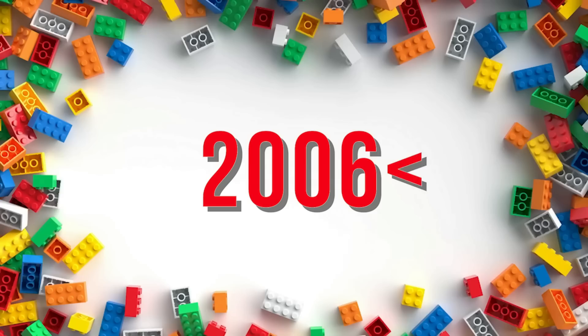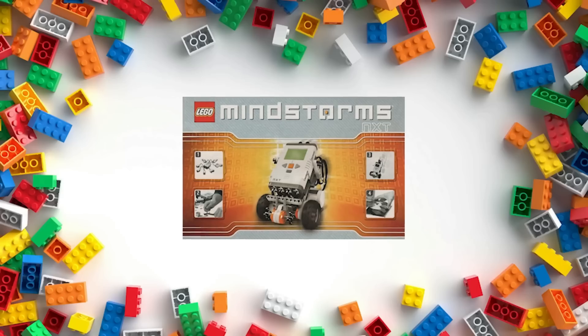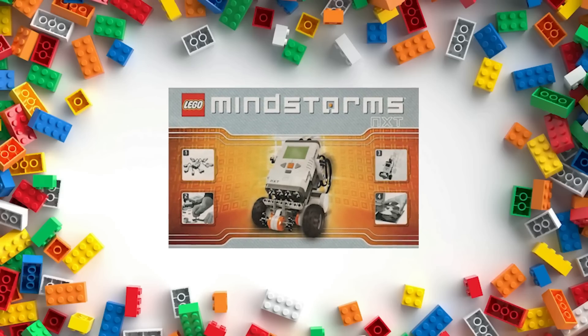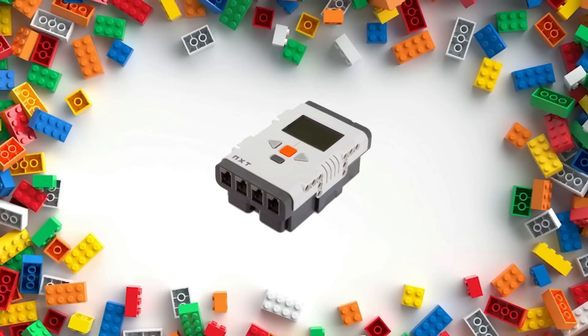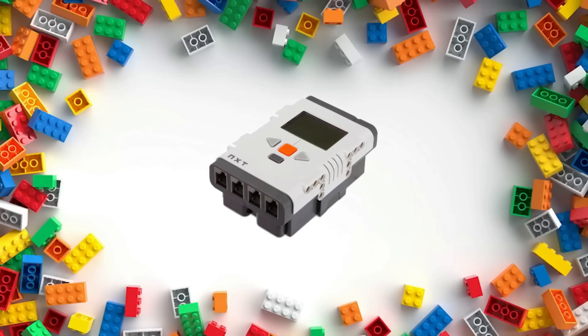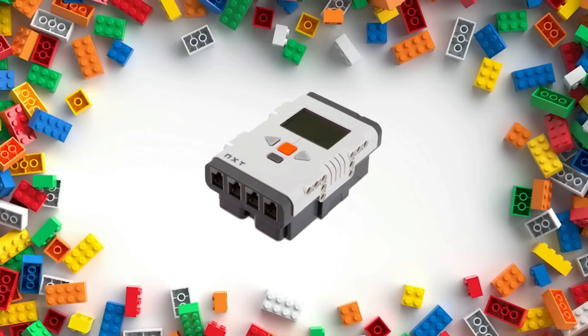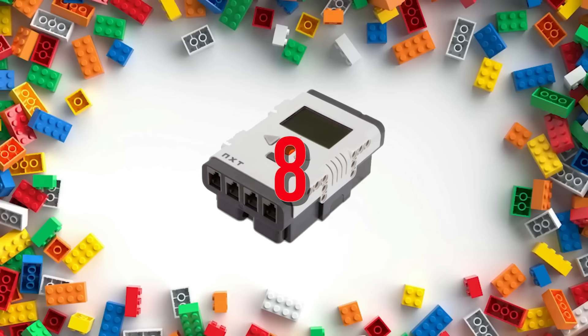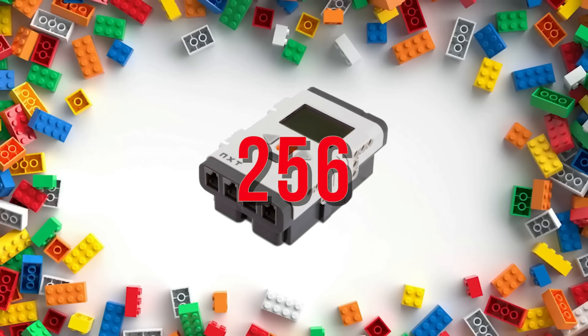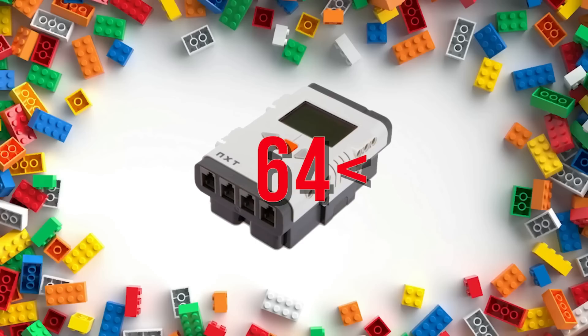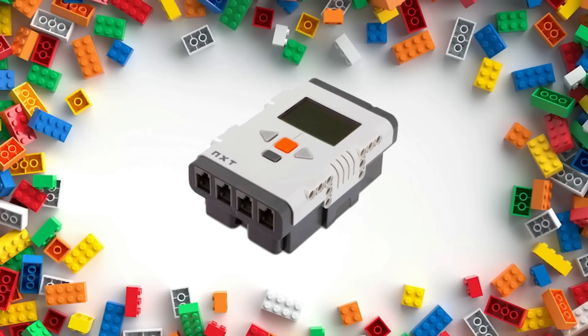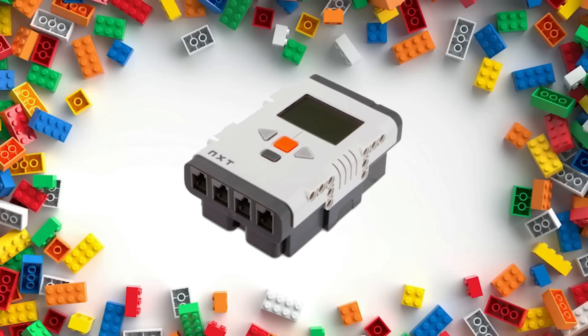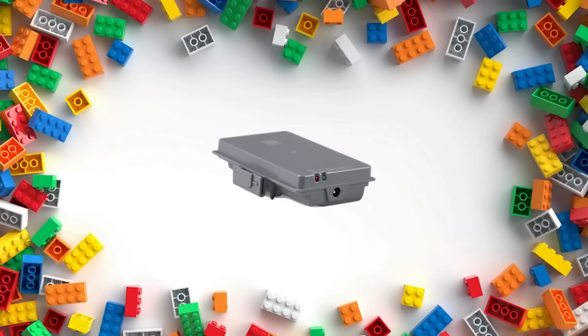This was a complete overhaul of the Mindstorms line and saw a brand new intelligent brick. This new brick saw several direct upgrades over its predecessor, with a new screen and a better user-friendly built-in menu system. Like the RCX, this featured an 8-bit processor, but upped the memory considerably with 256 kilobytes of flash memory and 64 kilobytes of RAM, which was decent for the time. The NXT also featured Bluetooth support, a speaker, and, at least on the educational version, a rechargeable lithium-ion battery.